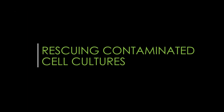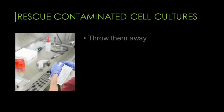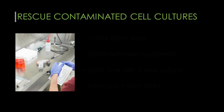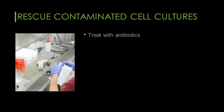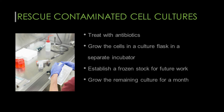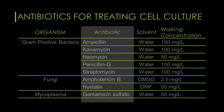How do you rescue contaminated cell cultures? Usually the best thing to do with contaminated cell cultures is to throw them away, decontaminate equipment, and start over with a new culture from your frozen stock. However, if you absolutely have to keep it, you can try to rescue it by treating it with antibiotics and growing the cells in a culture flask in a separate incubator. Once you're sure the contaminants are completely clear, establish a frozen stock for future work, grow the remaining culture for a month, and retest it for contaminants. Here's a chart of some antibiotics commonly used for treating contaminated cell culture, and you can find a link to the full protocol in the video description.